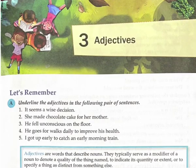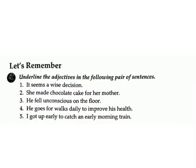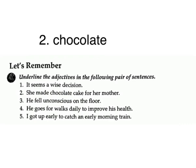Lesson 3: Adjectives. Let's remember. Underline the adjectives in the following pair of sentences. 1. 'It seems a wise decision.' Answer: wise. 2. 'She made chocolate cake for her mother.' Answer: chocolate.